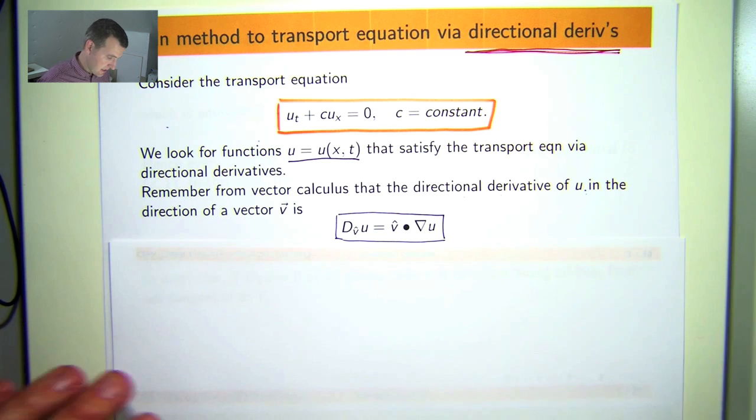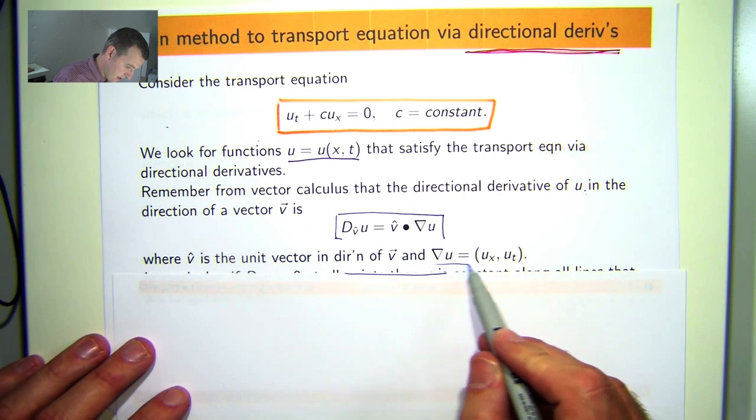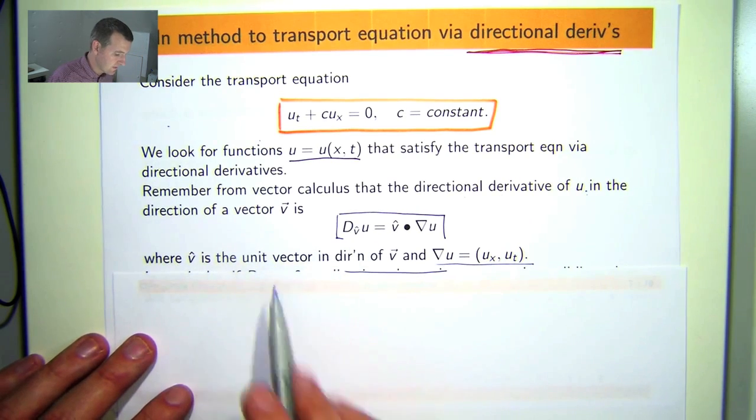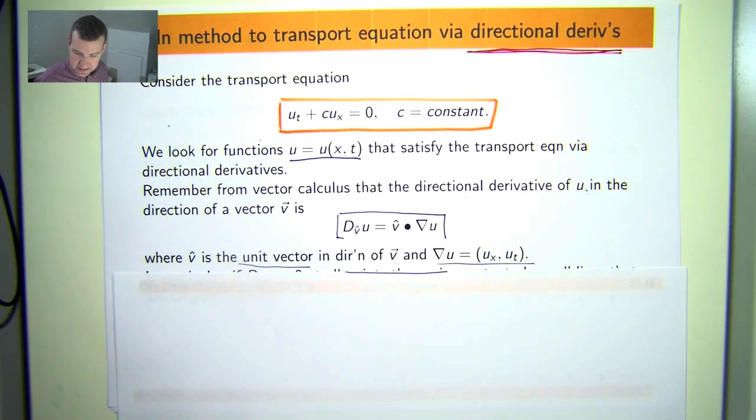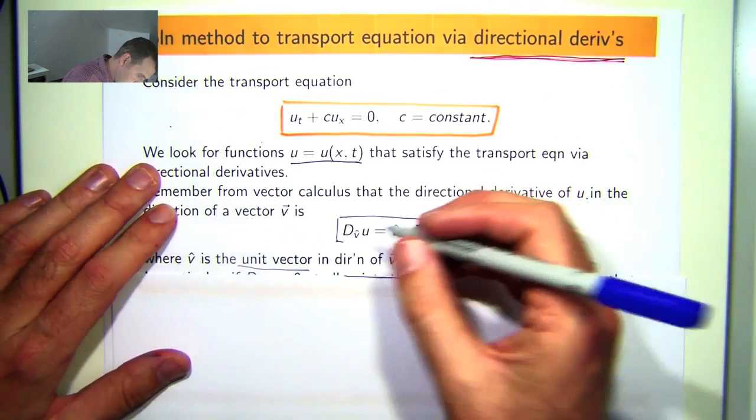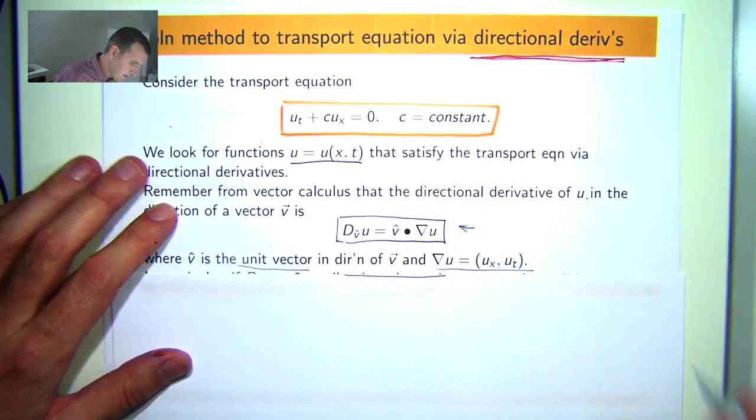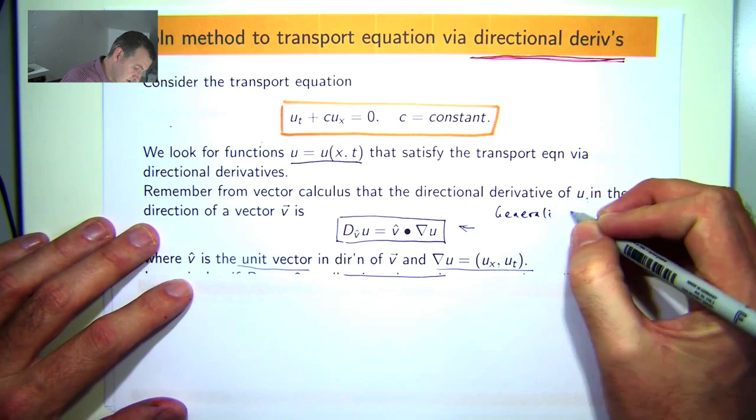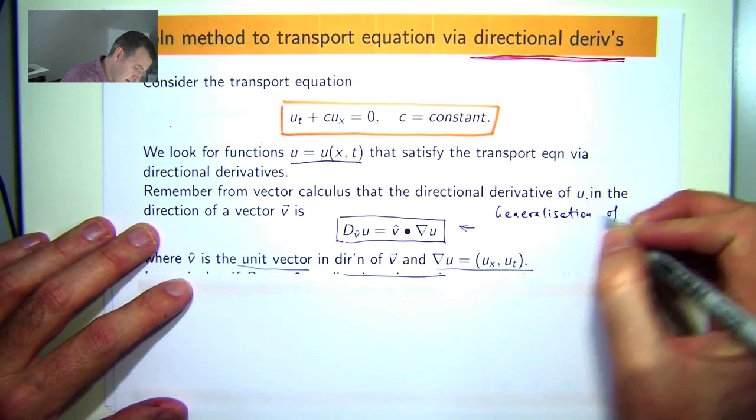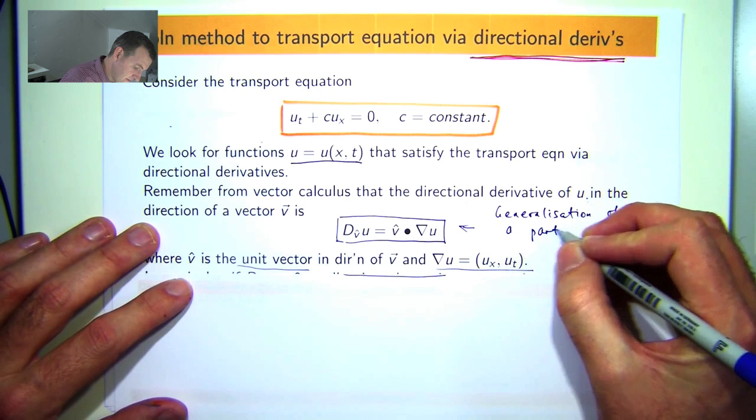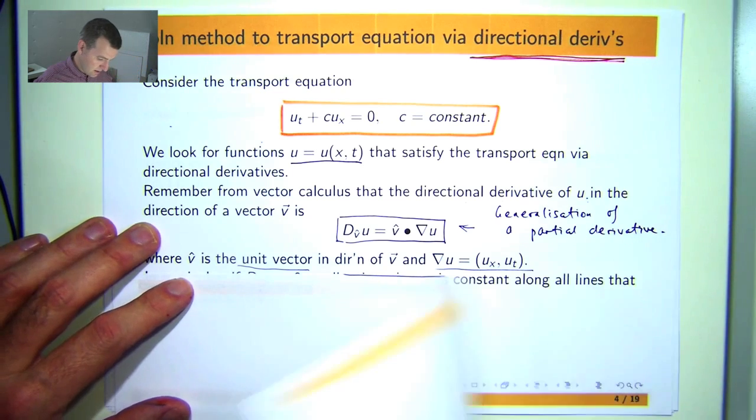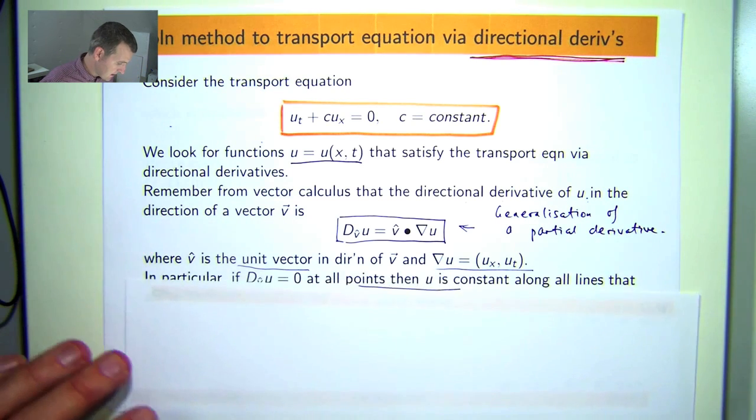Now in this case, in this context, the gradient is just u sub x comma u sub t and like I said before, v hat is a unit vector in the direction of a given vector v. Now, the directional derivative is just a generalization of a partial derivative.